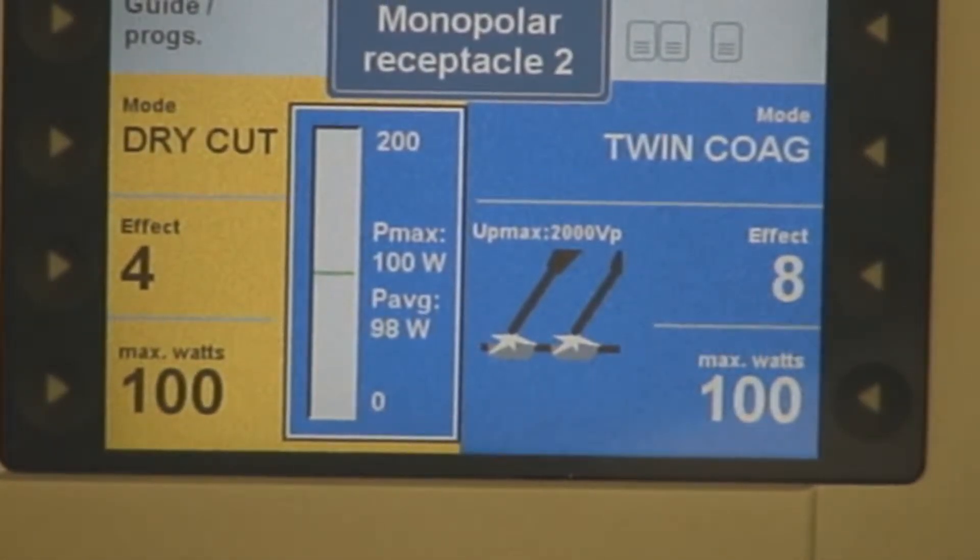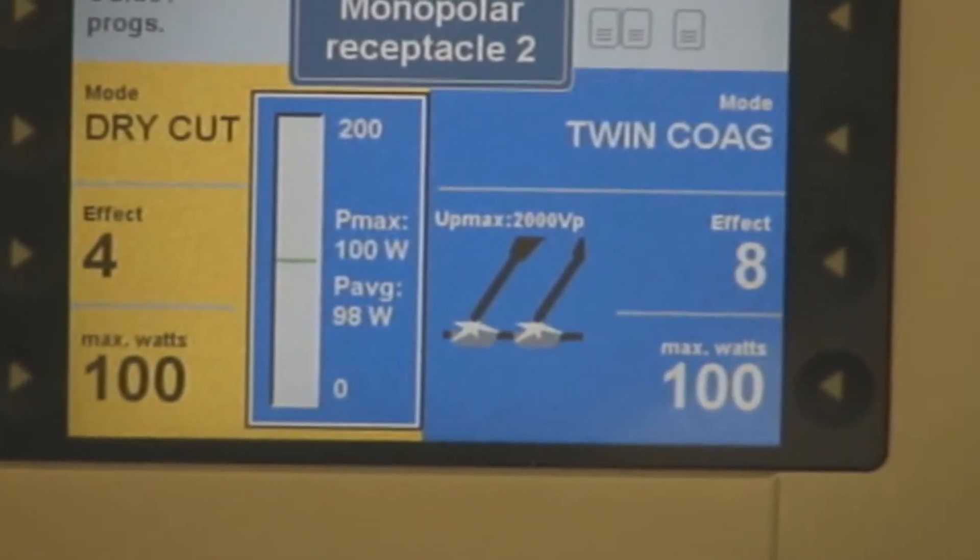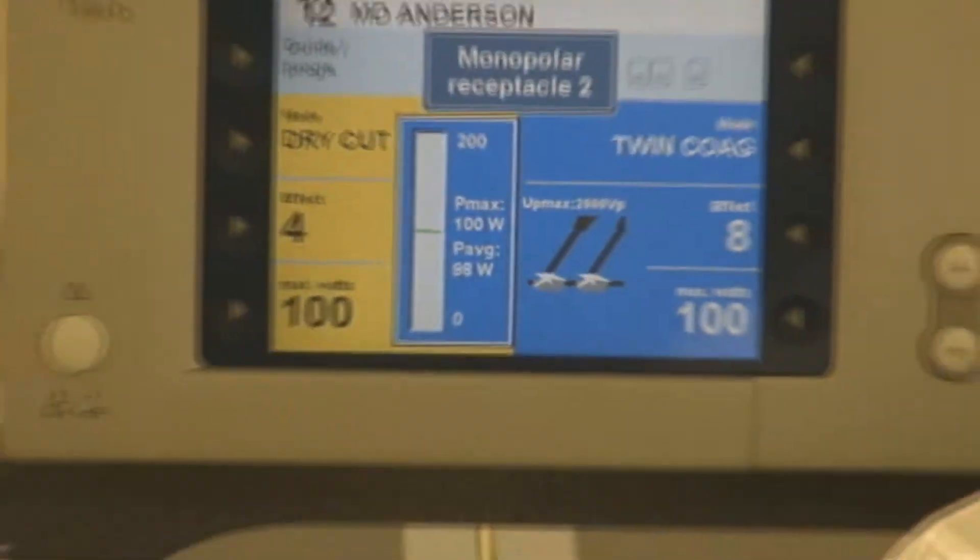We went ahead and changed the load values on the ESC analyzers to 500 ohms on each side.